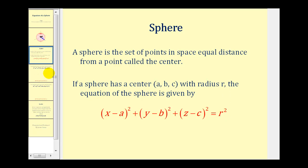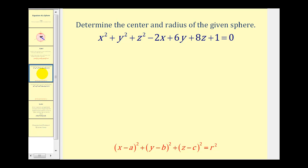Let's take a look at a couple of example problems. Here we want to determine the center and radius of the given sphere. We have to rewrite this equation in standard form to identify both the center and the radius. What we're going to do first is group the X terms together, the Y terms together, and the Z terms together.